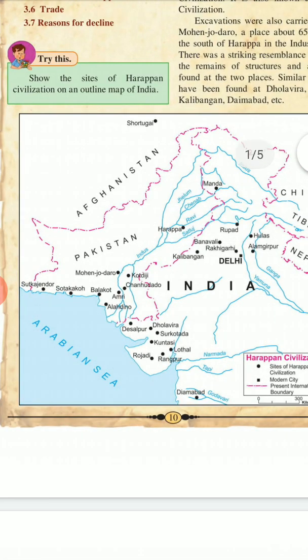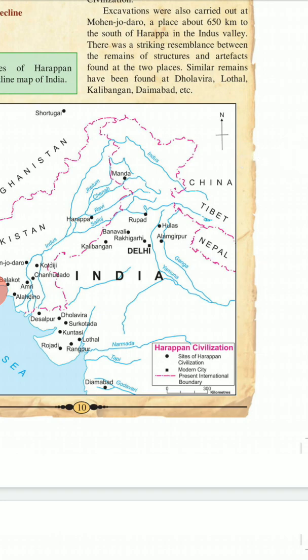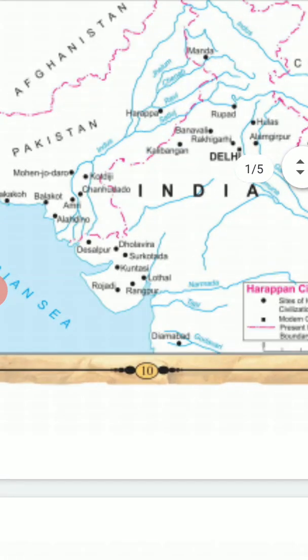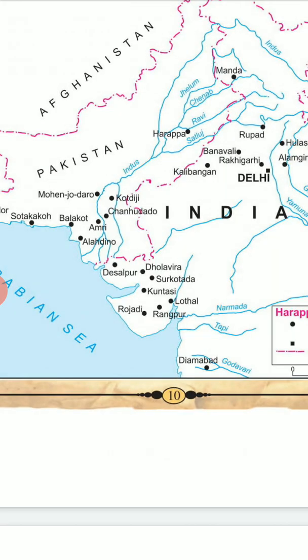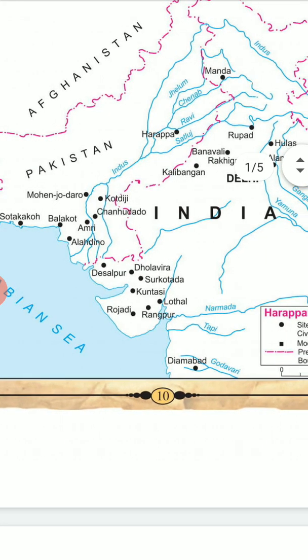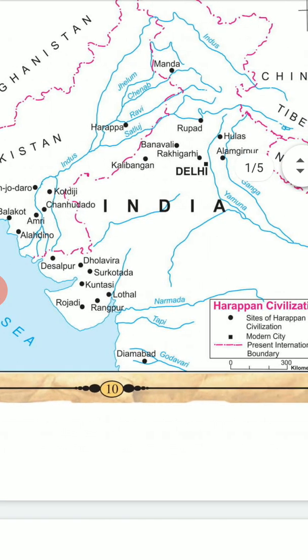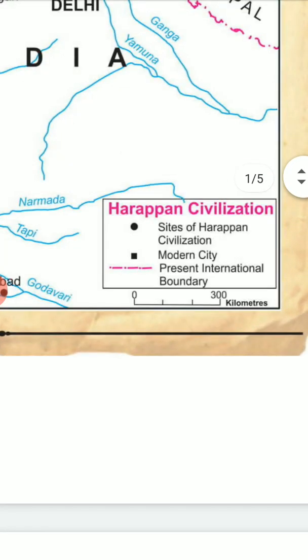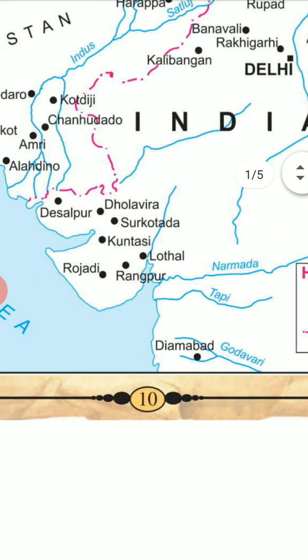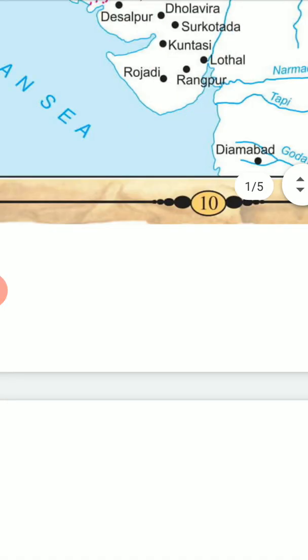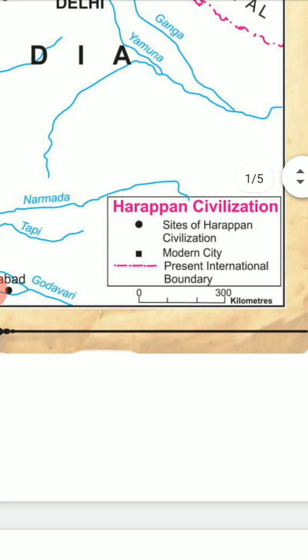You can see the international boundary between Pakistan and Afghanistan, and between Nepal and Tibet. The modern cities are shown by the filled square box, and the filled circle shows the sites of Harappan civilization. Lothal, Rakhigarhi, and similar places are the sites of the Harappan civilization.